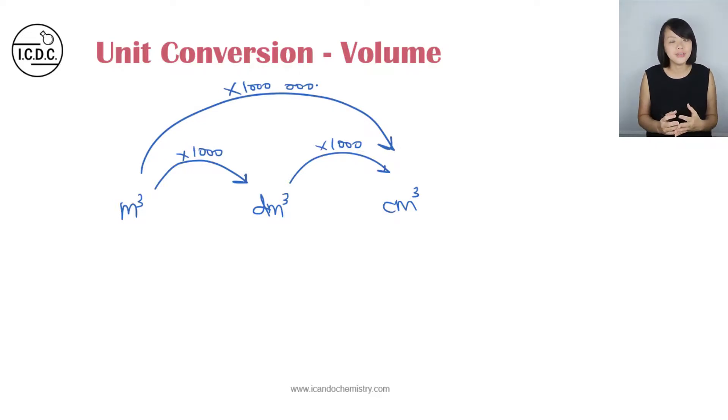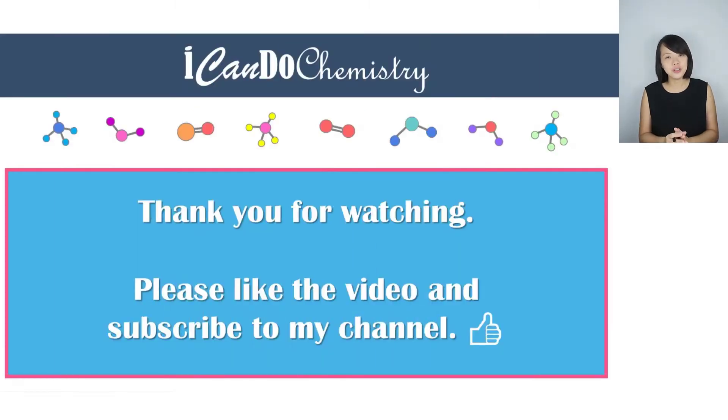What about the other way around? If we are given a substance in terms of cm cube and we want to convert it into dm cube, we can divide by a thousand. If we are to convert from dm cube to meter cube, we can divide by another thousand. Now if we are to convert from cm cube directly to meter cube, we divide by a thousand-thousand, which is divide by a million.